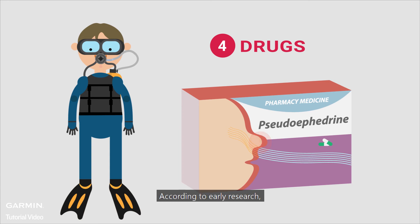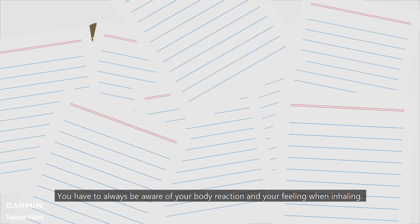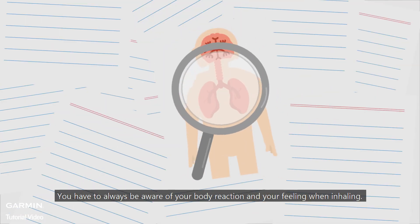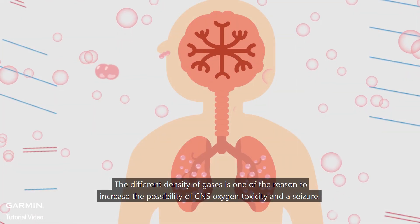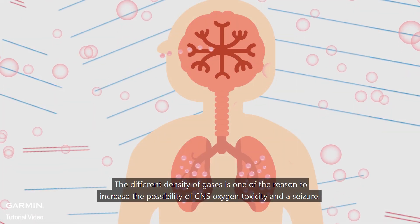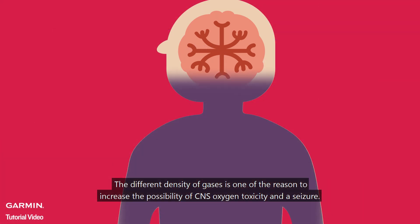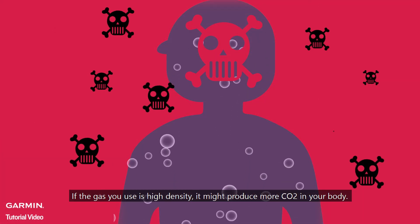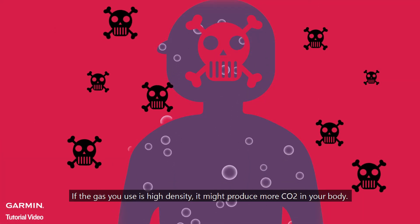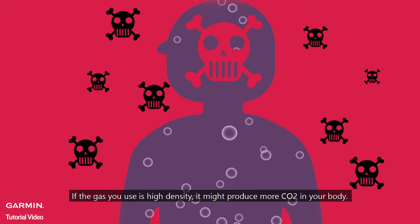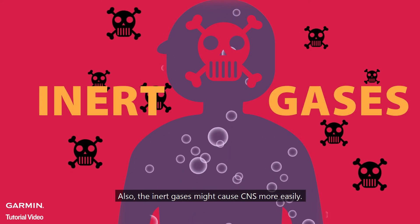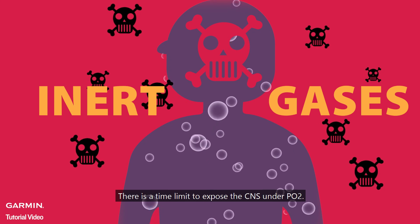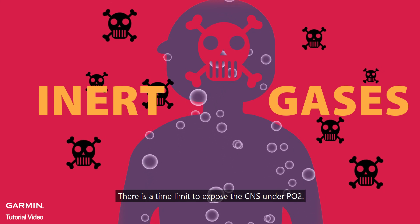According to early research, you have to always be aware of your body reaction and your feeling when inhaling. The different density of gases is one of the reasons to increase the possibility of CNS oxygen toxicity seizure. If the gas you use is high density, it might produce more CO2 in your body. Also, the inert gases might cause CNS issues more easily. There is a time limit to expose the CNS under PO2.